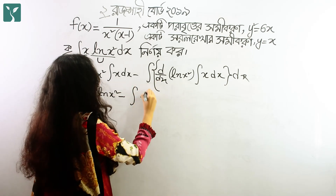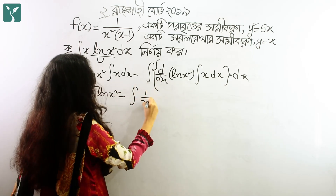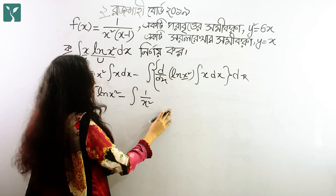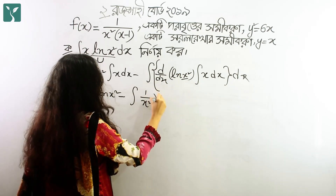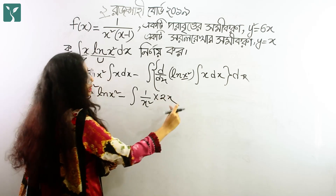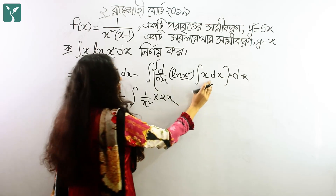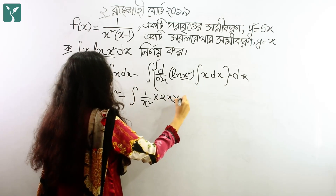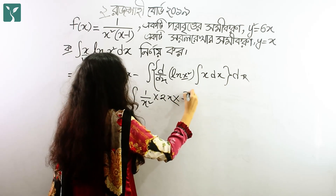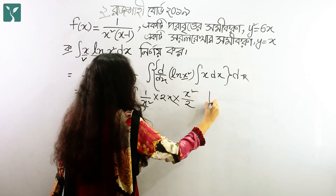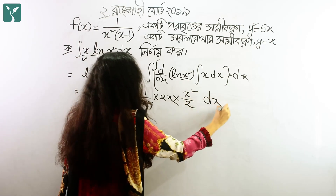So what we need to do is compute 1 over x squared into d/dx of x squared, which gives us 2x. So we get 2x over x squared, which simplifies. We then need to write x squared by 2 dx.